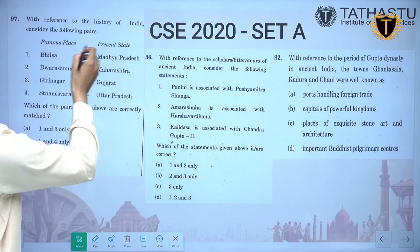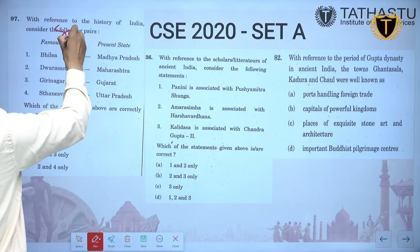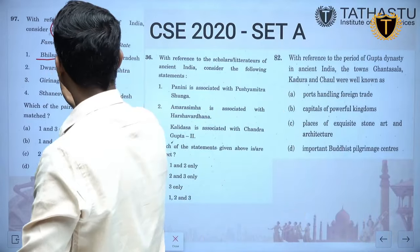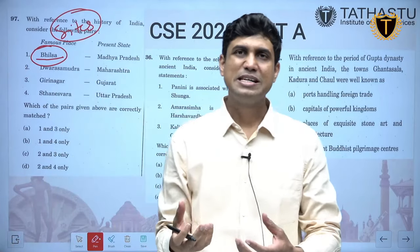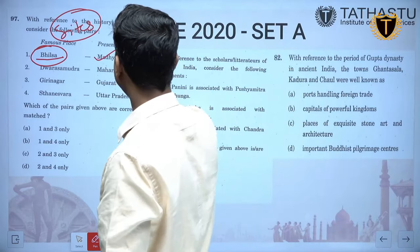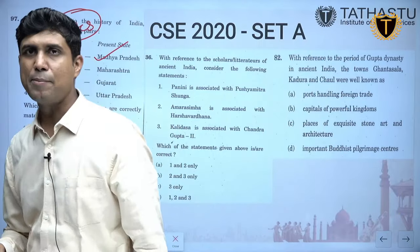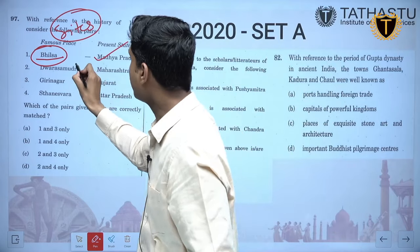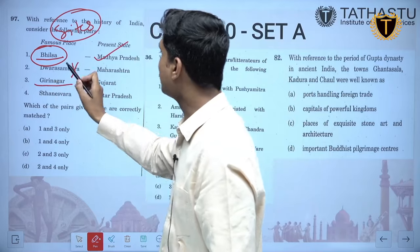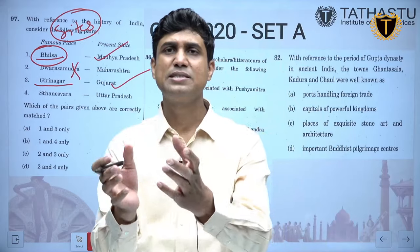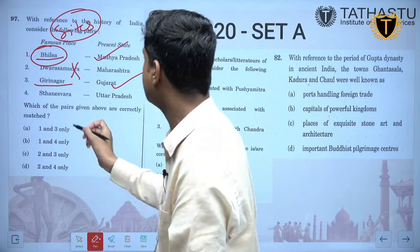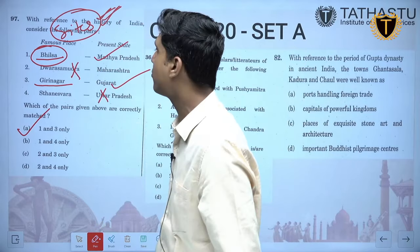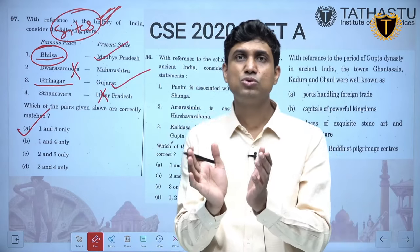With reference to history — consider the following pairs of famous places. Bhilsa is the present Vidisha in Madhya Pradesh — correct. Dwarasamudra was the capital of Hoysala and is present-day Halebid in Karnataka, not Maharashtra — wrong. Girinagar or Girnar is in Gujarat — correct. Sthaneshvara is the old name of Thanesar, which is in Haryana, not Uttar Pradesh — wrong. So correct is only pairs 1 and 3. UPSC keeps asking various capitals and ancient sites.